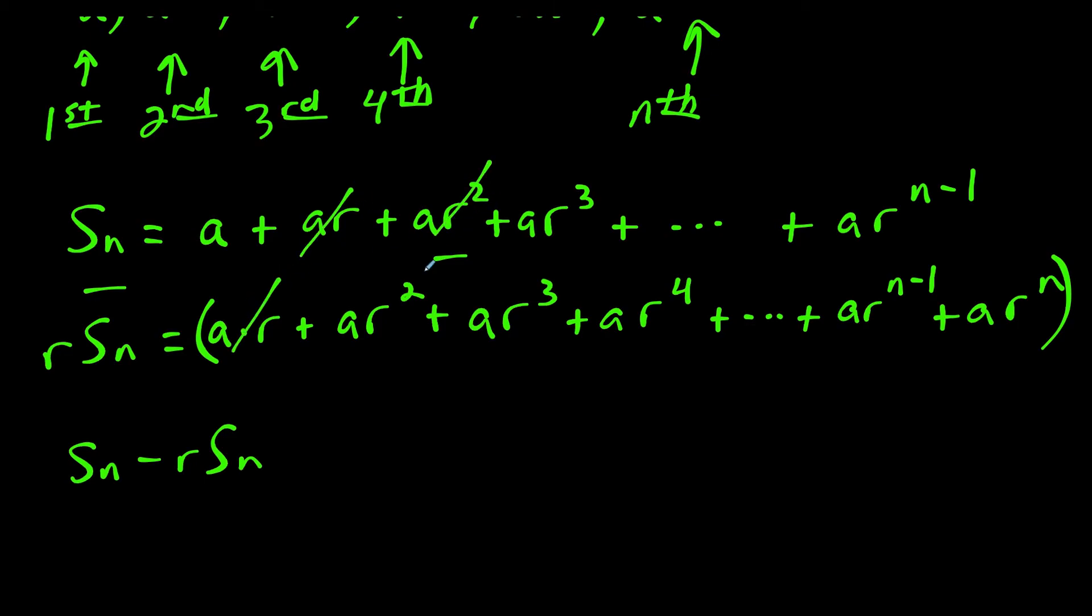We have ar squared minus ar squared, ar to the third minus ar to the third. We know this next term here is ar to the fourth, so that would cancel this one out. And then all the way at the end here, we stop at ar to the n minus 1. So when we subtract ar to the n minus 1, this cancels out. So the only thing remaining is on the right side, we have the first term a minus the last term ar to the n.